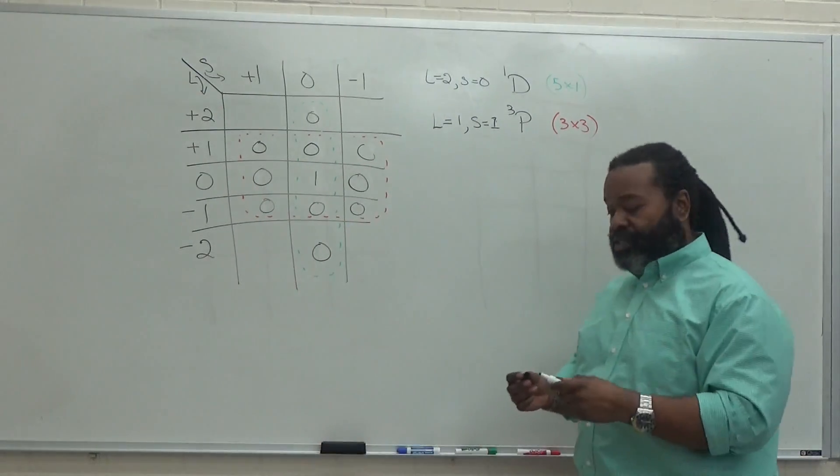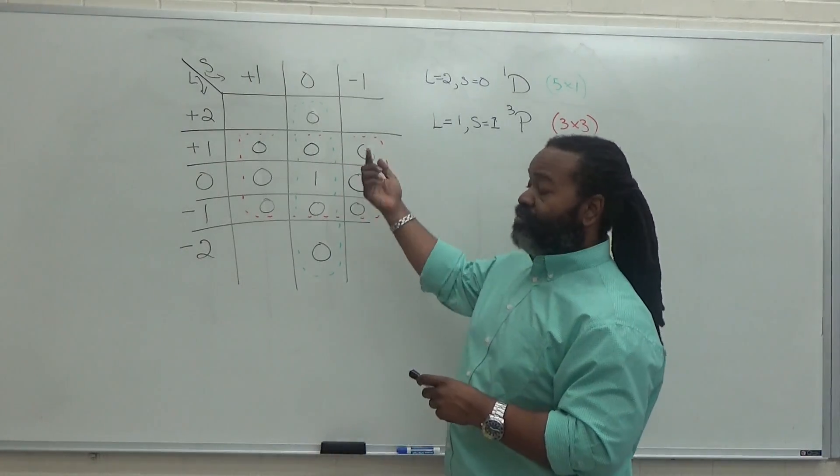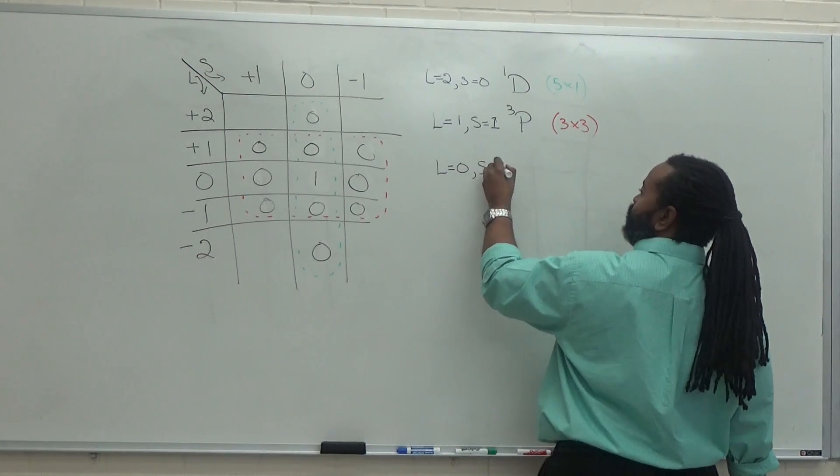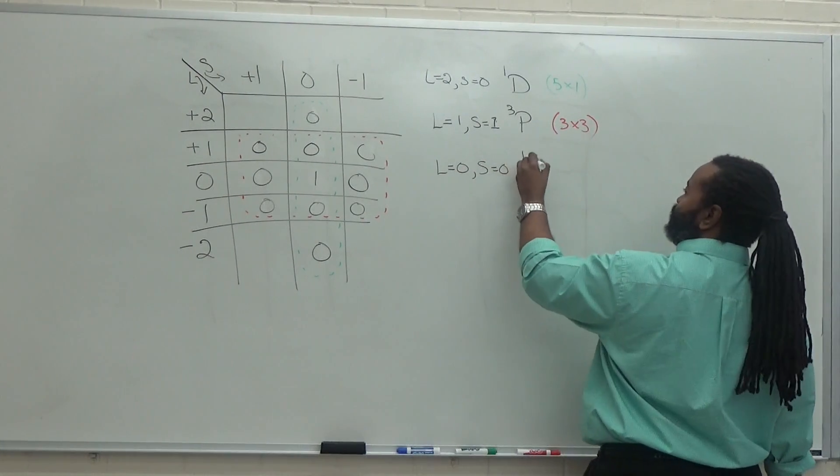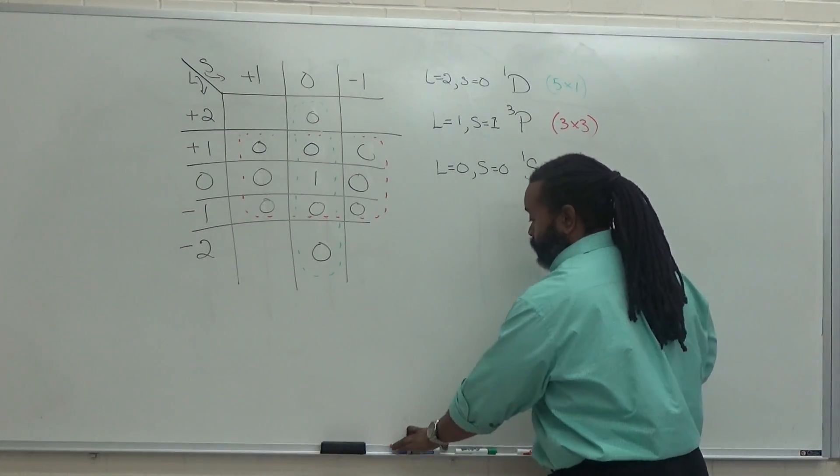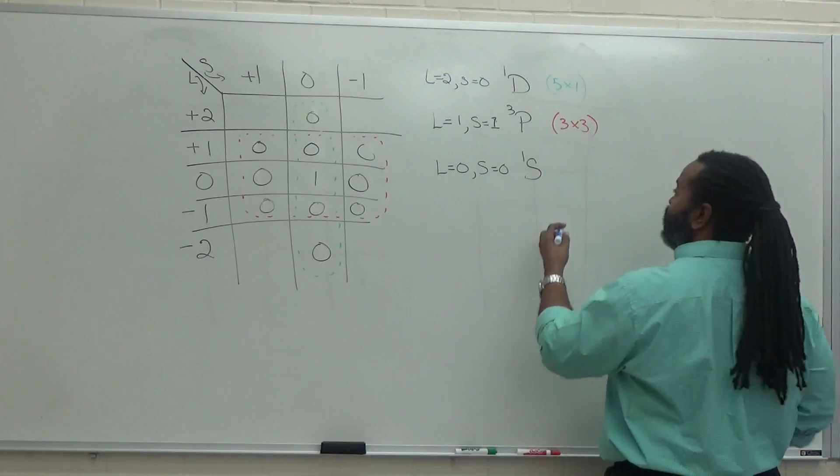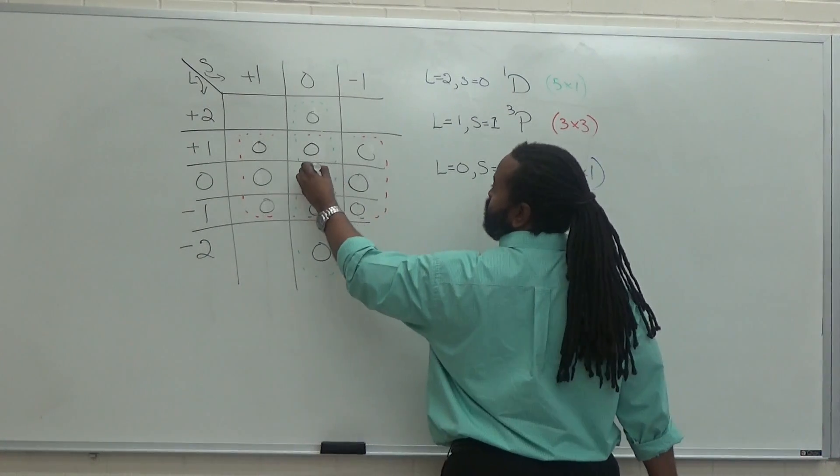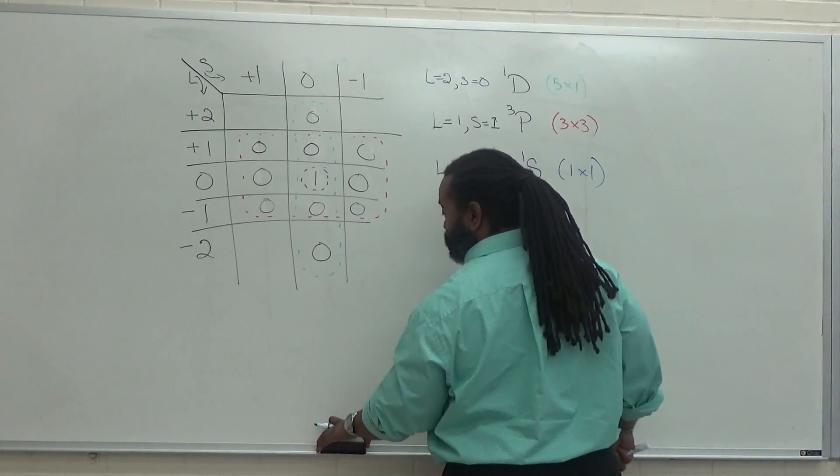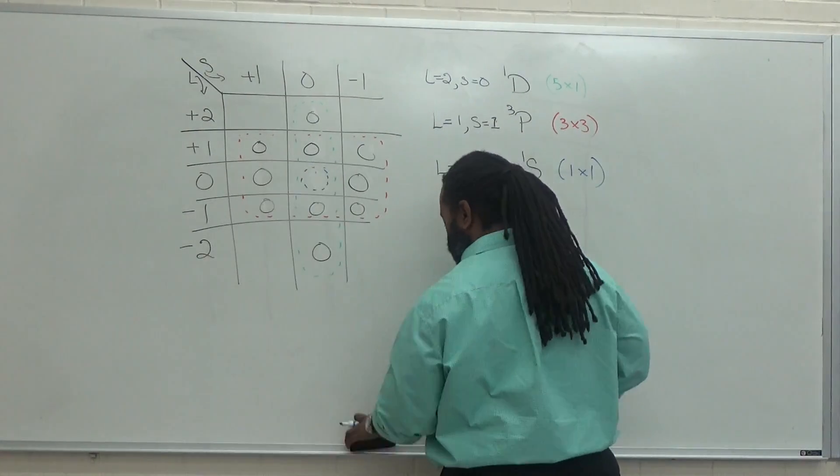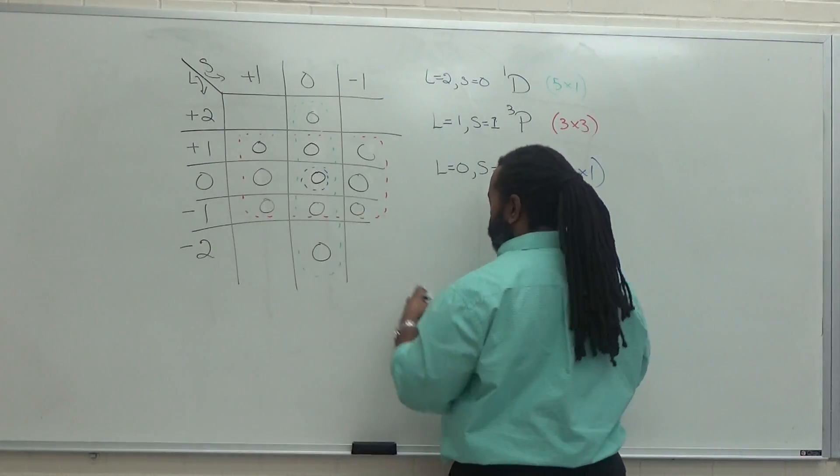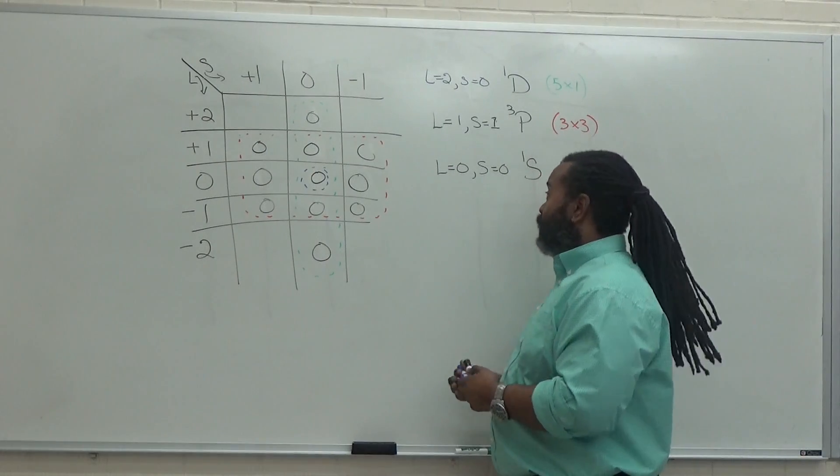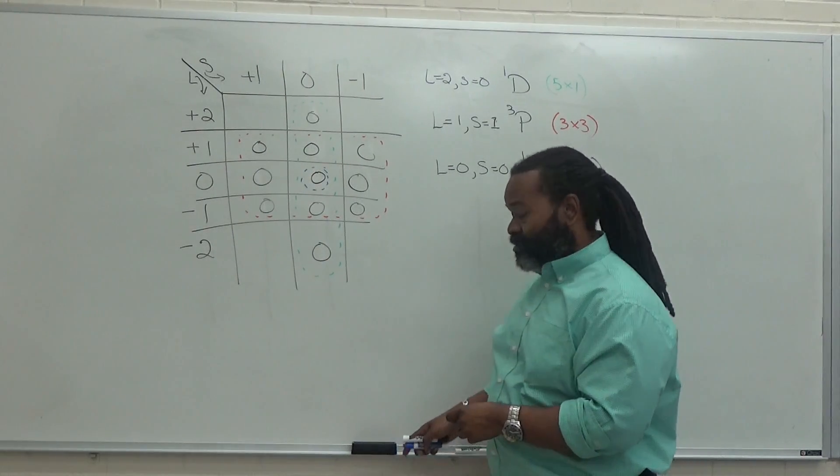So at this point, I only have one thing remaining. That's S equals zero and L equals zero. So if L equals zero and S equals zero, that is a singlet S. And because there's only one possible thing in the range for each, I strike a one by one section. It's this part. And so this then becomes zero. And I've now eliminated every combination. And that completes step four.